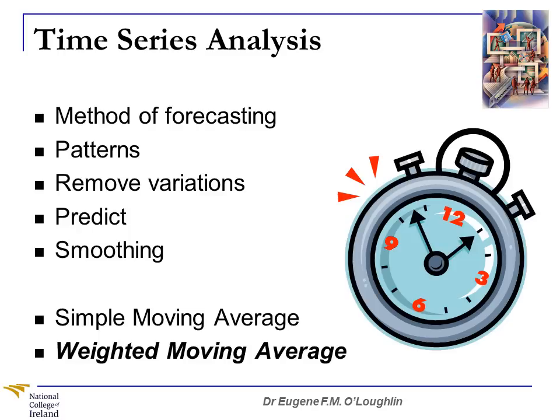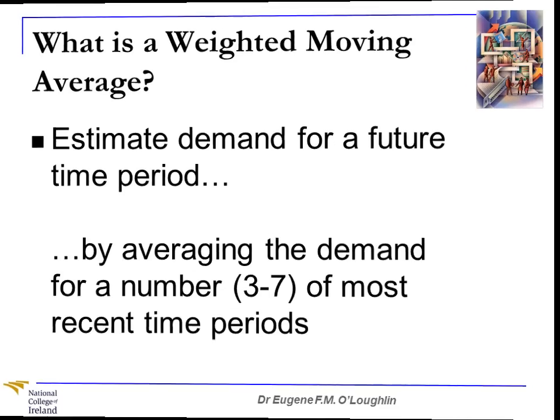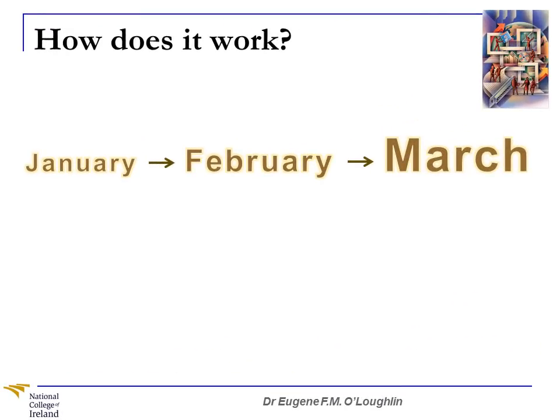The two most basic types of time series analysis are simple moving averages and weighted moving averages, and we're going to examine weighted moving averages in this video. Simple moving averages have been covered in another video on my channel. So first off, what is a weighted moving average? It is an estimate of the demand for a future time period, and we do this by averaging the demand for a number — usually between 3 and 7 — of the most recent time periods.